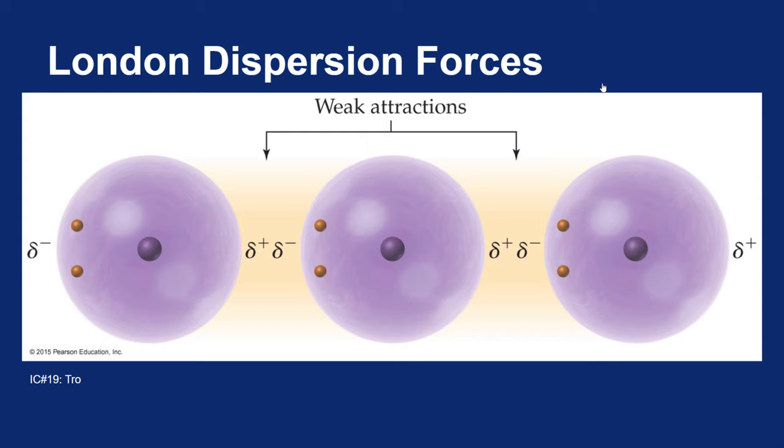The atom in the middle will force an atom next to it to become polar. And now you have this attractive force between it. Now in this diagram, the attractive force is relatively weak. But the more electrons your atom has, the stronger these dispersion forces can get. So you can actually scale these dispersion forces based on how big a molecule is and how many electrons are present.